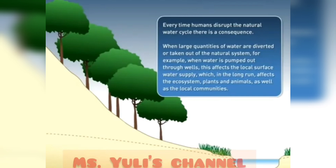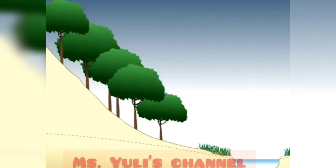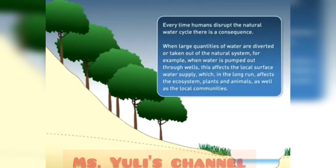When large quantities of water are diverted or taken out of the natural system — for example, when water is pumped out through wells — this affects the local surface water supply, which in the long run affects the ecosystem, plants, and animals as well as the local communities.